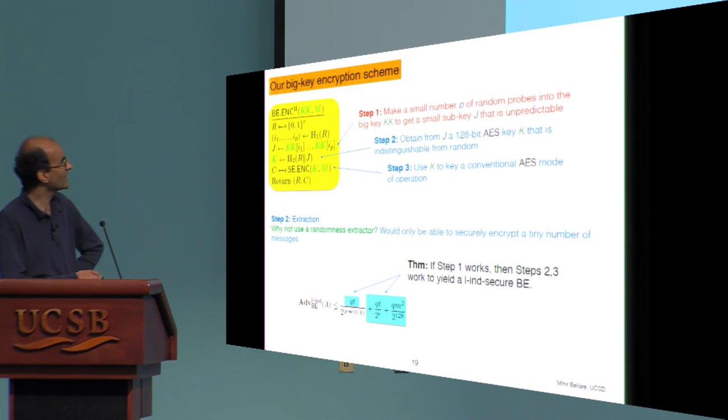So the other steps are relatively straightforward. The second step, which is applying the hash function over here, is effectively extraction. One might ask, why not use a standard randomness extractor? And the answer is, because that's information theoretic, you would be limited to a very small number of extractions. And by using a random oracle or something computational, you can get a lot more.